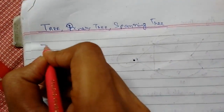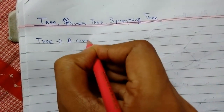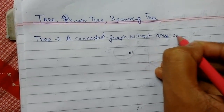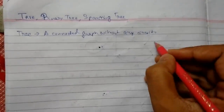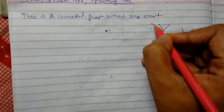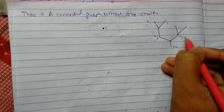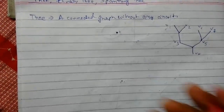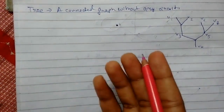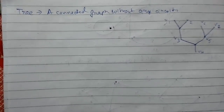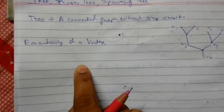First, the definition of a tree: a tree is a connected graph without any circuit. A tree should have at least one vertex, and a tree is always a simple graph because a loop or parallel edges will make it a circuit. A collection of trees is called a forest.